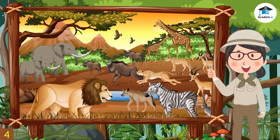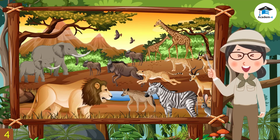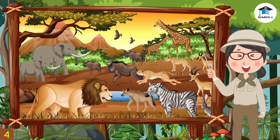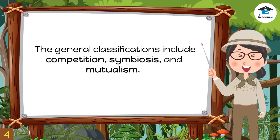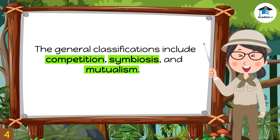Look at the picture again. Which interactions are useful to the organisms involved? Which ones are considered to be harmful? There are many biological interactions that can be observed in an ecosystem. The general classifications include competition, symbiosis, and mutualism.